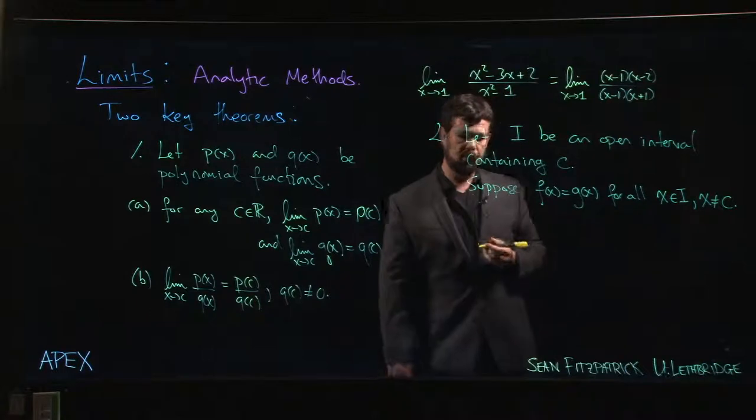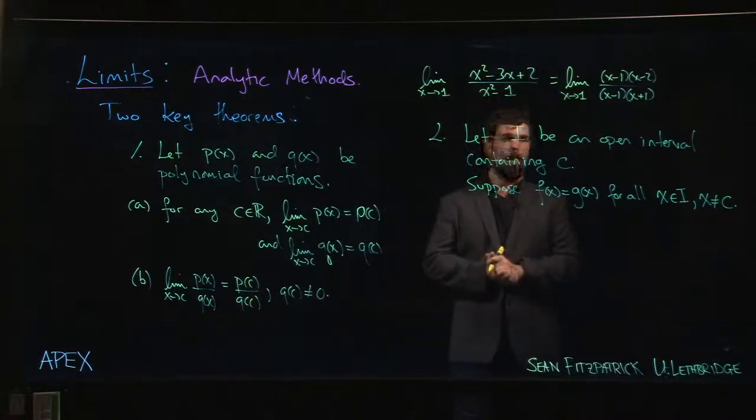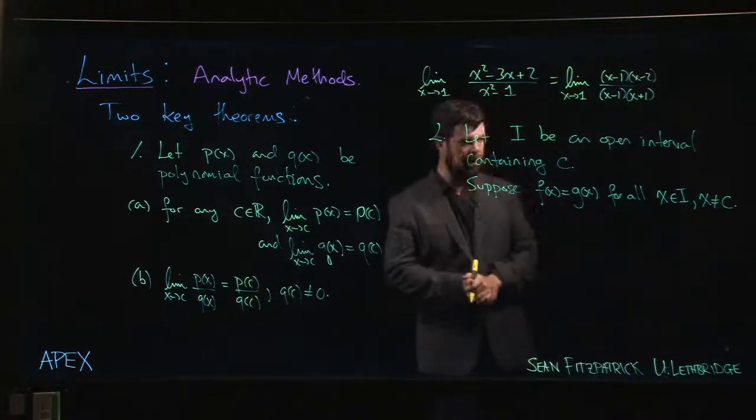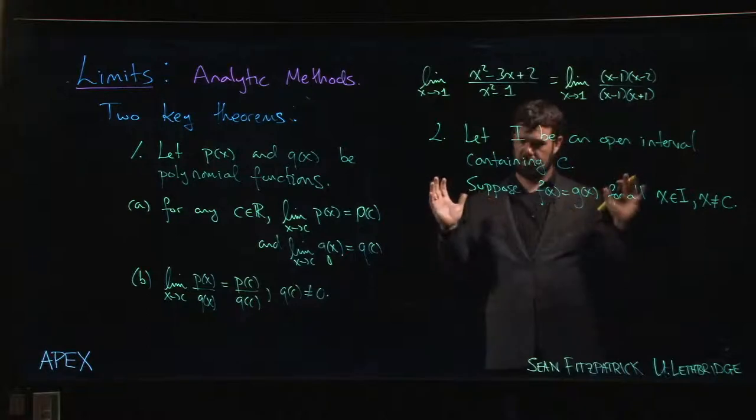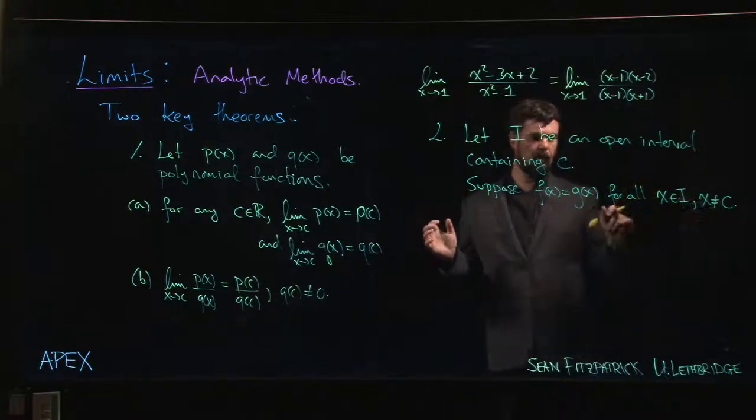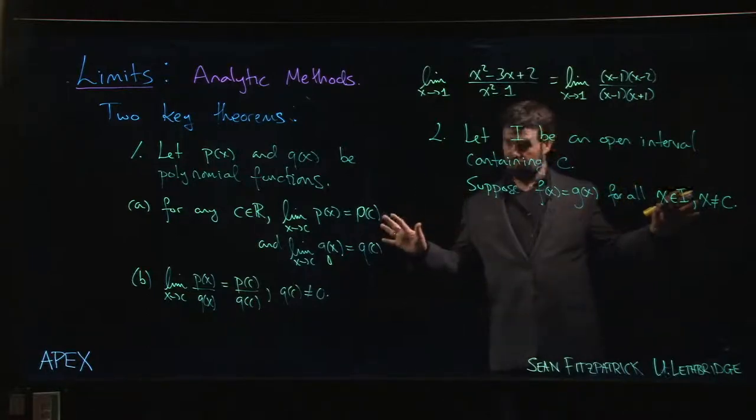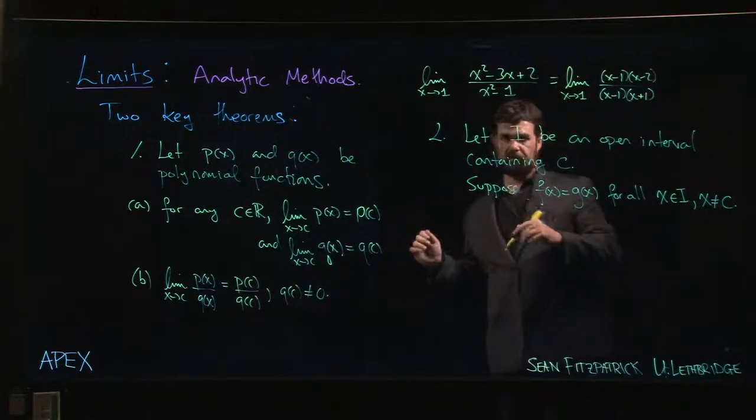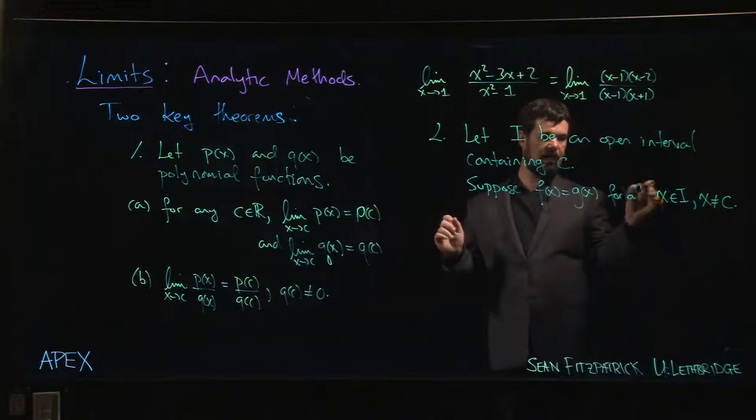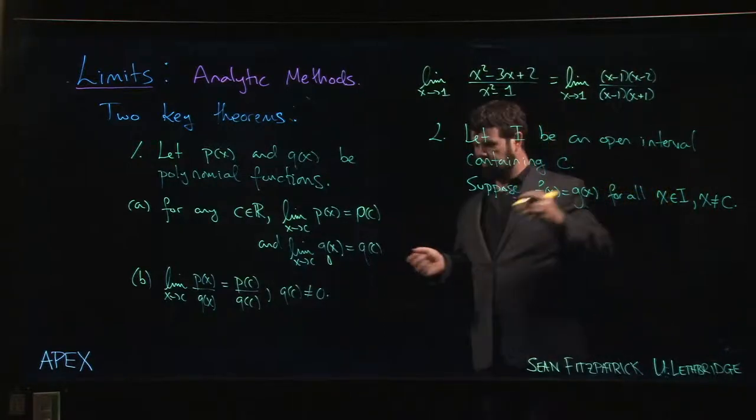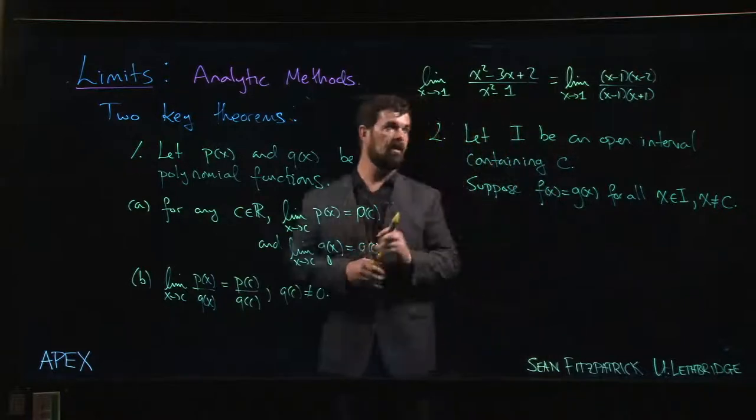Now the second theorem says something about what happens when you have two functions that agree almost everywhere except at one point. Maybe there are other points where they disagree, but they're outside this interval. So you've got some interval on which these two functions agree at every single point except maybe this one point, which of course is going to be the point that you're interested in.